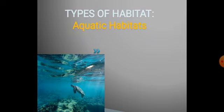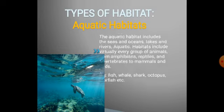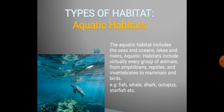Now the types of habitat. Number 1: Aquatic habitat. The aquatic habitat includes the seas and oceans, lakes and rivers. Aquatic habitats include virtually every group of animals, from amphibians, reptiles and invertebrates to mammals and birds. For example, fish, shark, whale, octopus, starfish, etc.